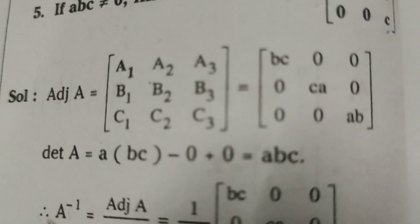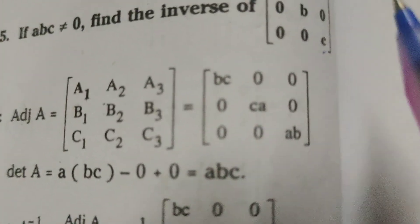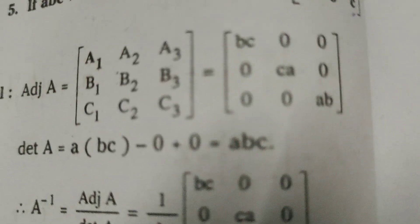Okay, now find out the det A. det A means A into bc minus 0, that is bc. Remaining all are here 0, we will get 0. Therefore only abc. abc is the determination of the matrix.